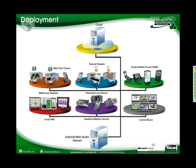SecureViewer is very powerful when you need more than one HMI on the same machine — for example, one HMI on the front and another on the rear. Instead of licensing and installing the product on both HMIs, you install everything on just one HMI, and the second is a SecureViewer that connects to the first runtime and provides another graphical interface. Studio Mobile Access is our solution to provide real-time information to mobile devices like cell phones and tablets — iPhones, iPads, Androids, Blackberries — any device with a web browser.